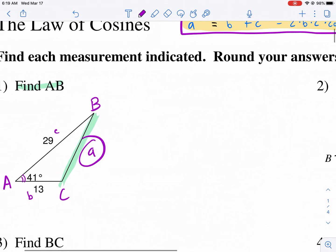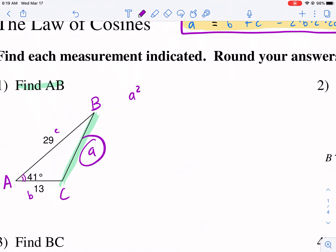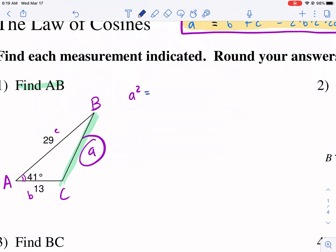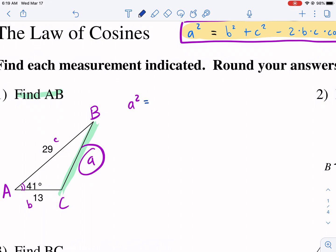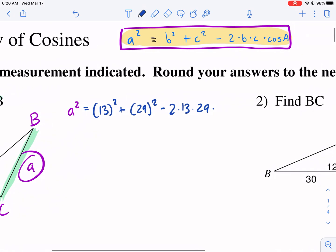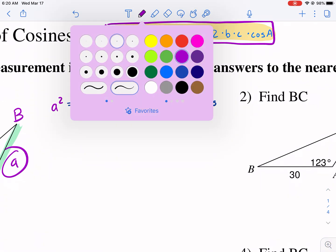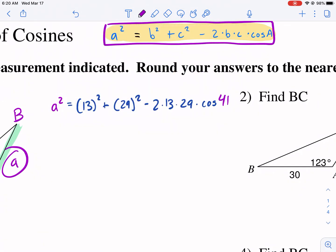I'm looking for a squared, and then what do I have already established? Well, I know that I have b squared. I'm going to plug in b, that's 13, squared, plus c squared, that's 29, squared, minus 2 times b times c, 29, times cosine of a, cosine of 41. So you can see here, I have a by itself, and now it's just a matter of using my calculator.